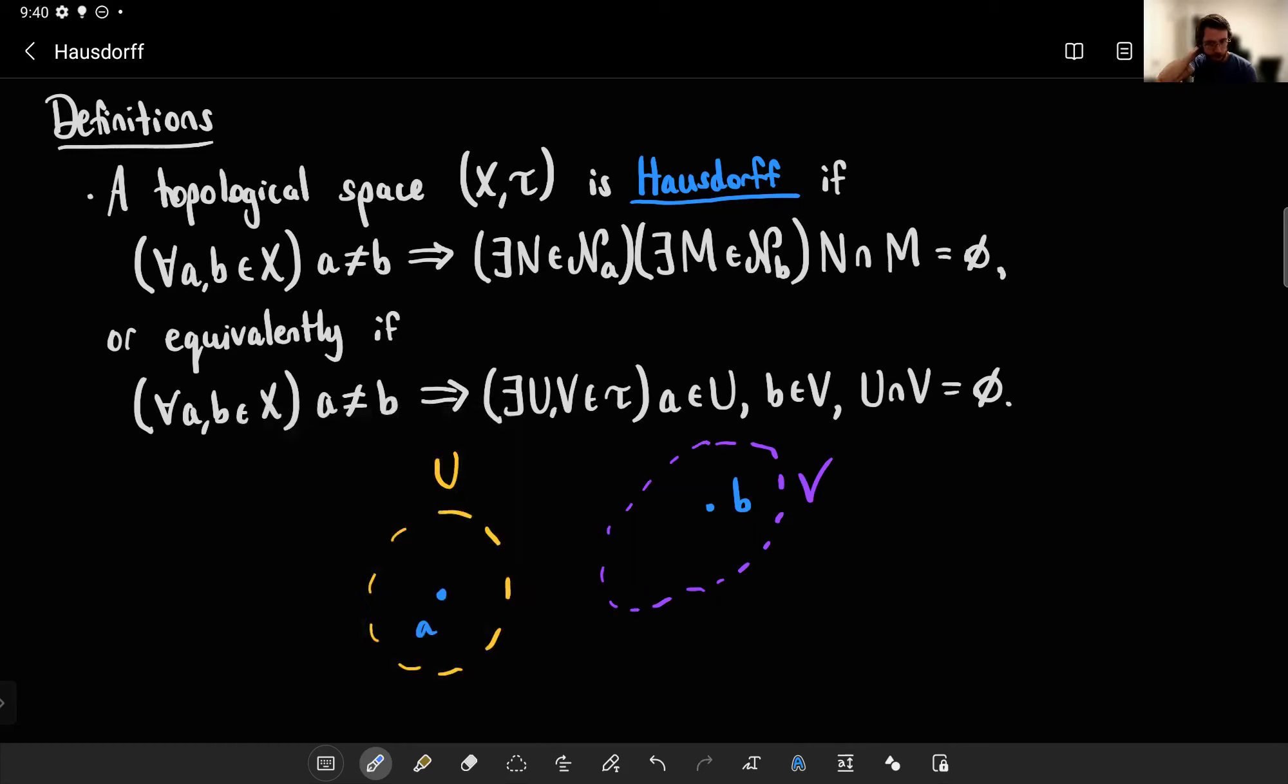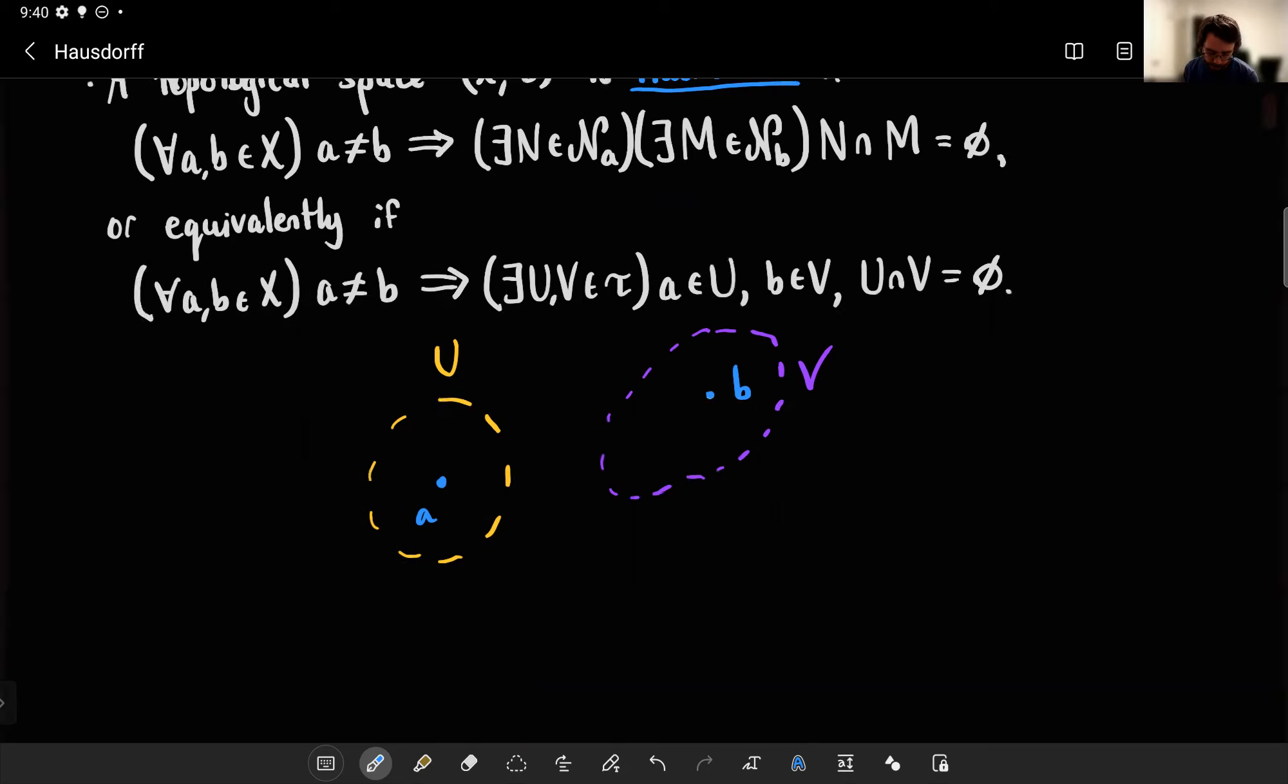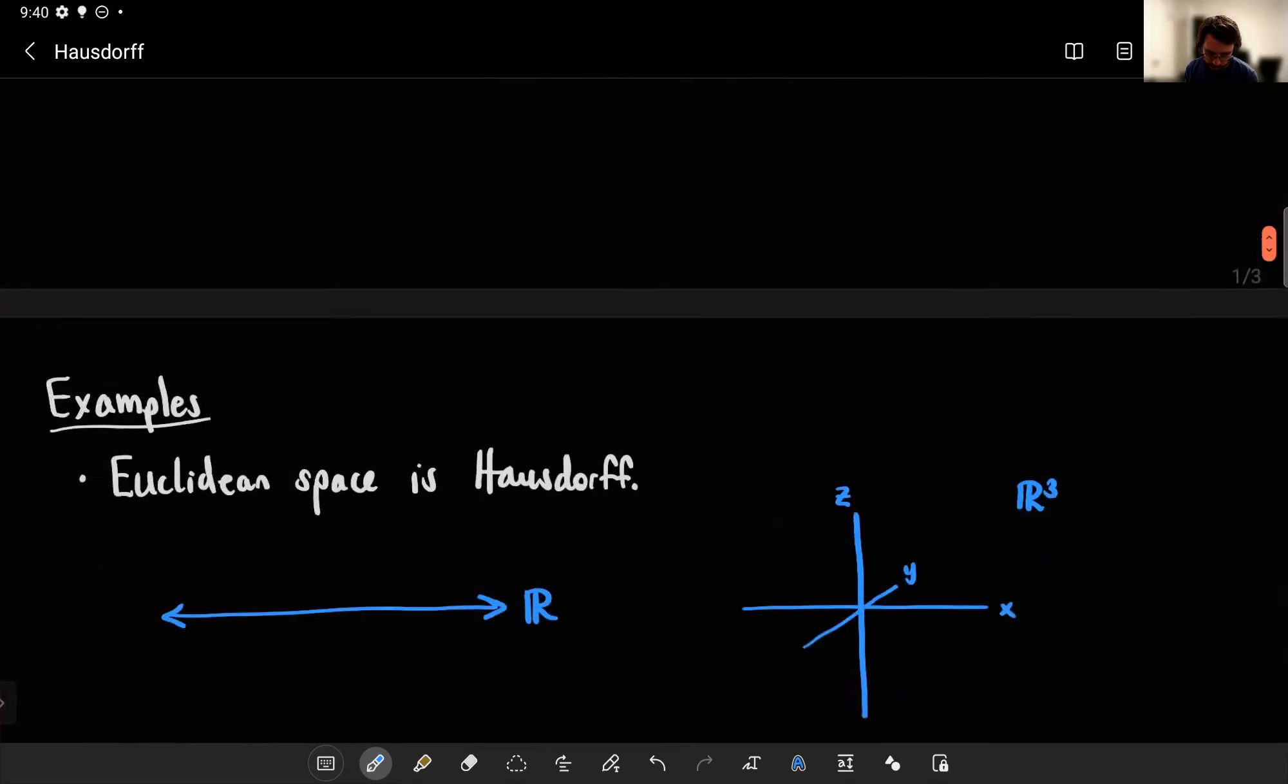However, in a general topological space, our open sets might get ugly. So we'll see some examples of non-Hausdorff topological spaces. But first, let's see some nice examples.